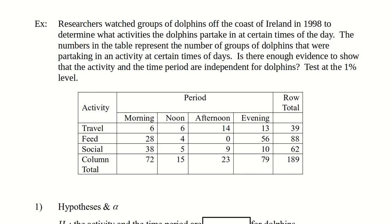So here's another example using data we've seen before. This is the data collected off the coast of Ireland of observing dolphins. So here are the two categorical variables, the time of day: morning, noon, afternoon, and evening, and what those dolphins are up to: traveling, feeding, socializing. The bottom row is a total and the far right column is a total. Remember when you use the calculator, you won't put in that data.